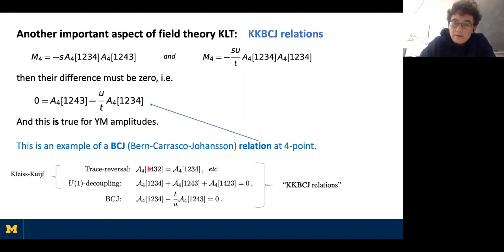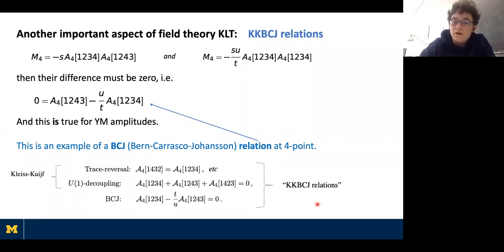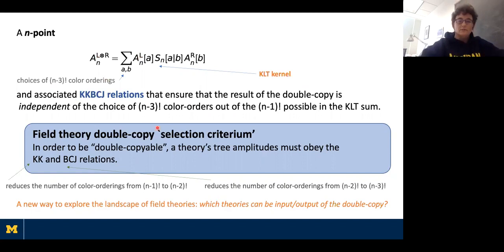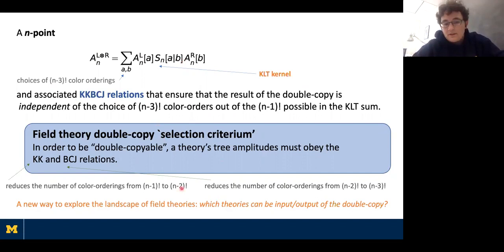The general relations generated are nothing but the Kleiss-Kuijf relations — trace-reversal identities — the U(1) decoupling relation (that a photon associated with a U(1) factor would have to be decoupled), and the BCJ relation. At four point, the (n-1)!=6 possible color orderings are reduced to a single independent one — (n-3)!=1 — by these five relations. This is no coincidence. Asking which field theories can be double-copied gives a selection criterion: they must obey the combined KK-BCJ relations, otherwise the double copy wouldn't give a unique answer.